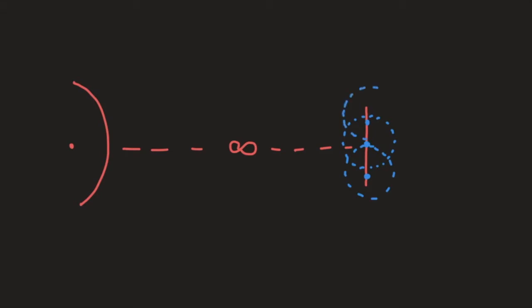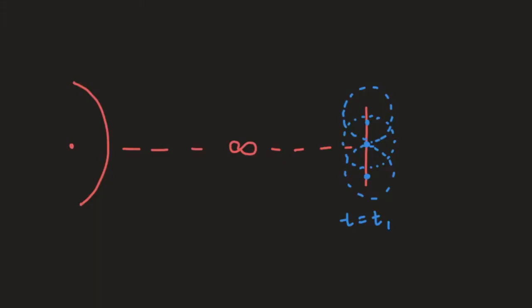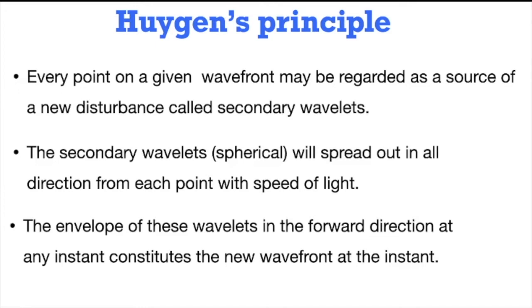This helps us in deciding the new position of the wavefront. If this is at time t equals t1, we can decide what will be the wavefront at t1 plus delta t. These secondary wavelets, spherical in shape, will spread out in all directions from each point with the speed of light. The envelope of these wavelets in the forward direction at any instant constitutes the new wavefront at that instant.